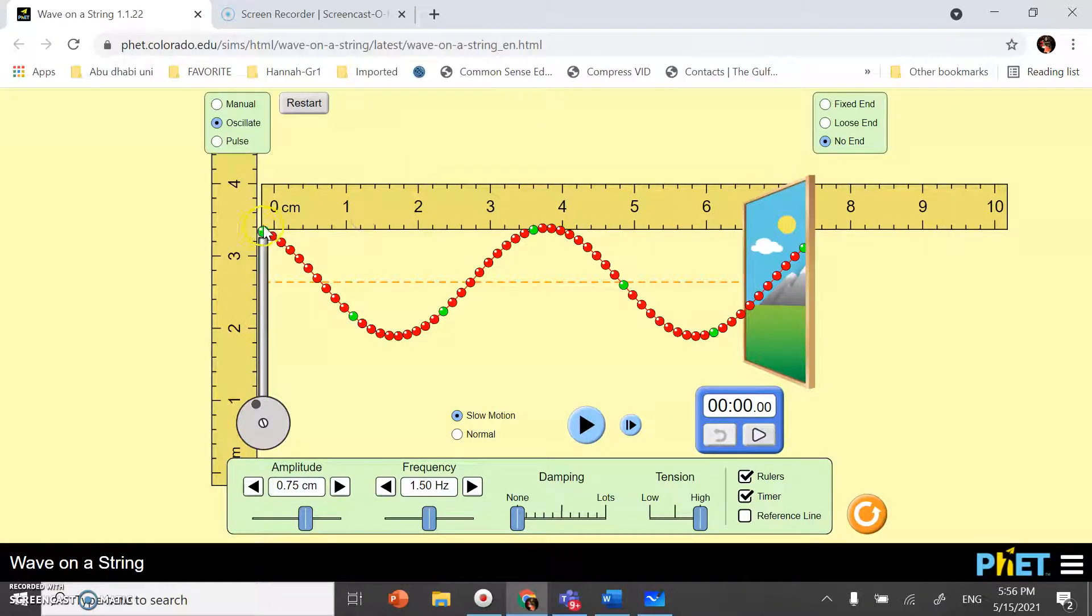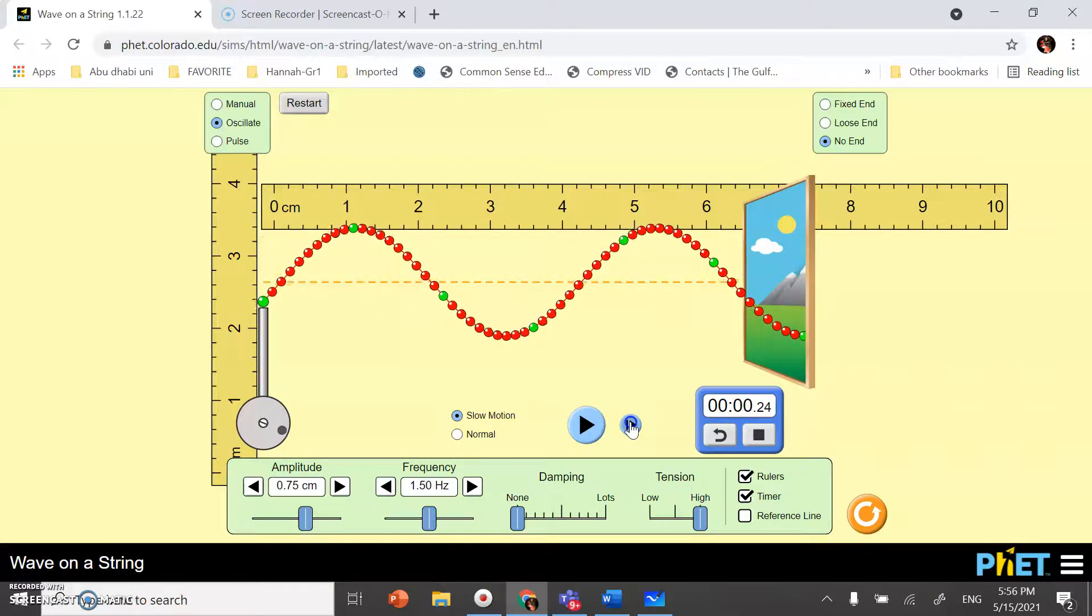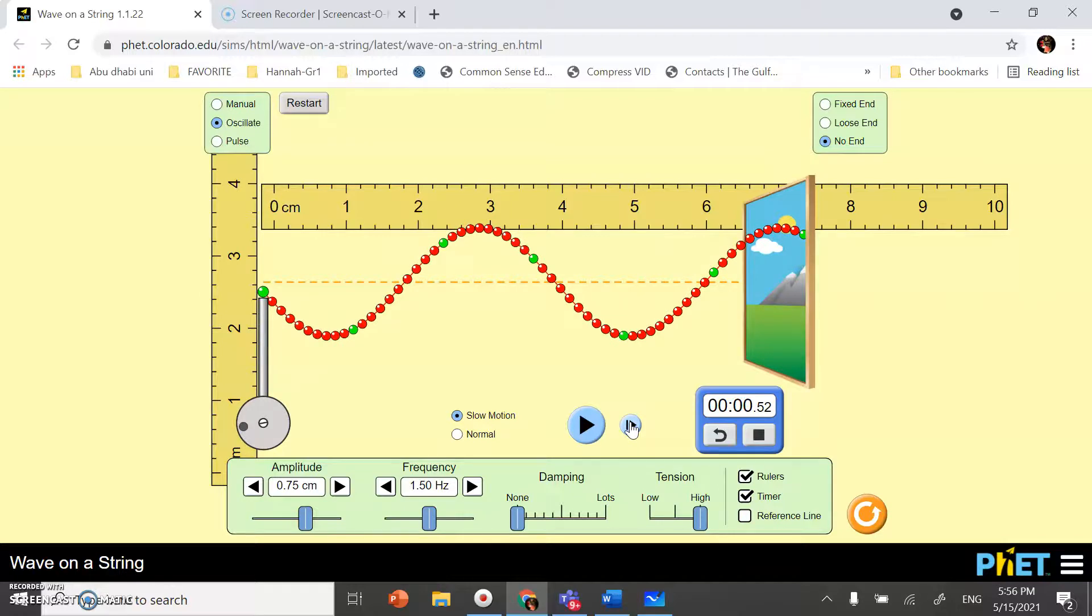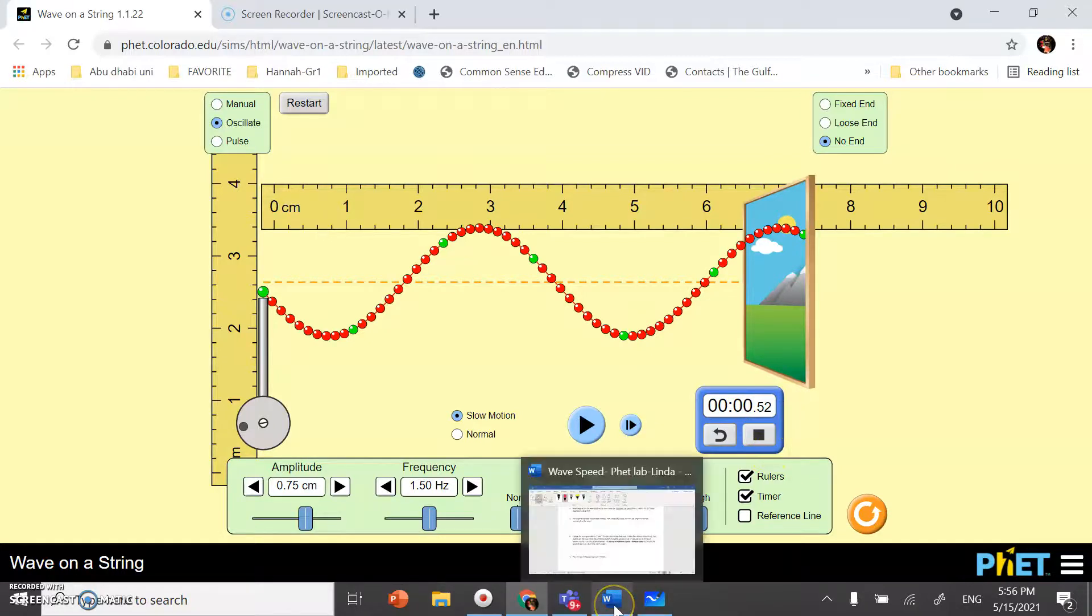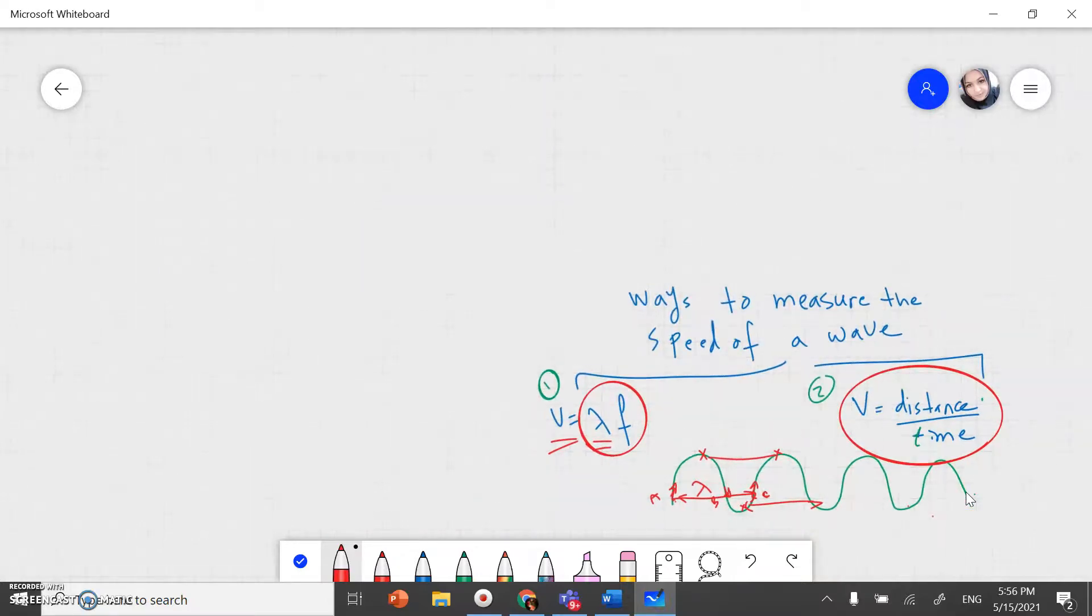So, here is the crest. Till it reach 3. Set the timer. And, then forward the time. Till it reach 3. Your eye on the crest. Till it reach. Now, it reach 3. So, it's around 0.50 or 0.52. So, how can I measure the speed? The speed. It will be distance, which is 3 centimeter divided by 0.52.